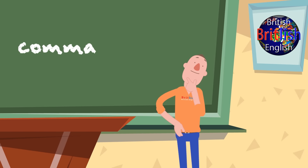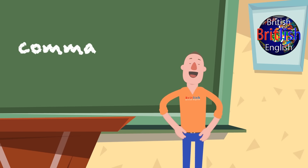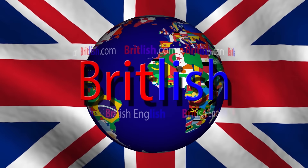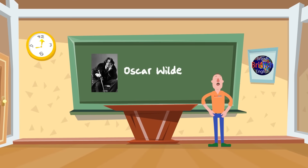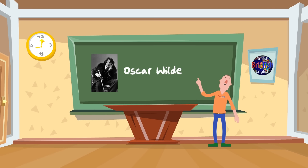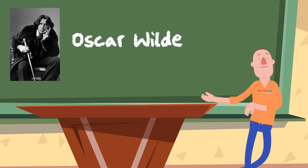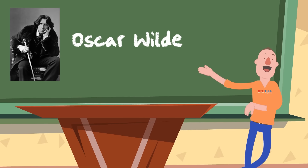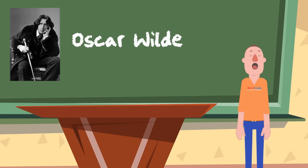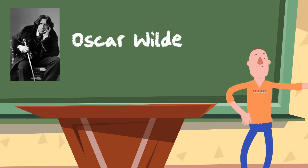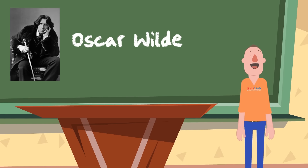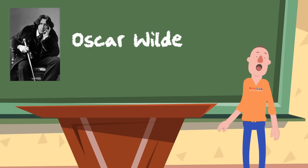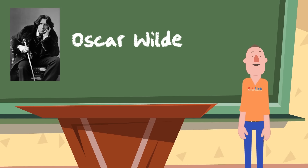The Comma: English Punctuation for Students. Oscar Wilde, a great British writer, once admitted to spending an entire morning removing a comma from a poem. Asked if that was all he had done, Wilde replied, 'By no means. On mature reflection, I put back the comma.' If a great writer like Oscar Wilde had difficulty in deciding where and when to use a comma, what chance have the rest of us got?